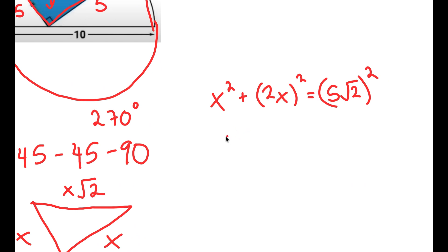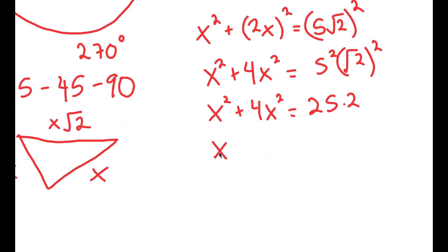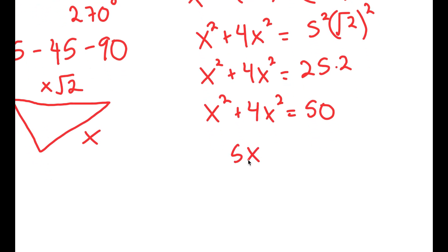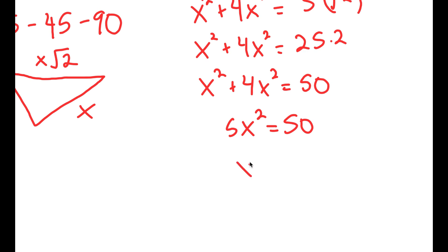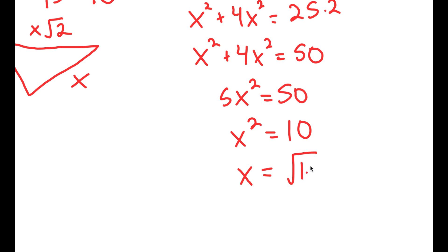Simplifying, I get x² + 4x² = 5² × (√2)², which equals x² + 4x² = 25 × 2, which turns into 5x² = 50. So x² = 10, meaning x = √10.